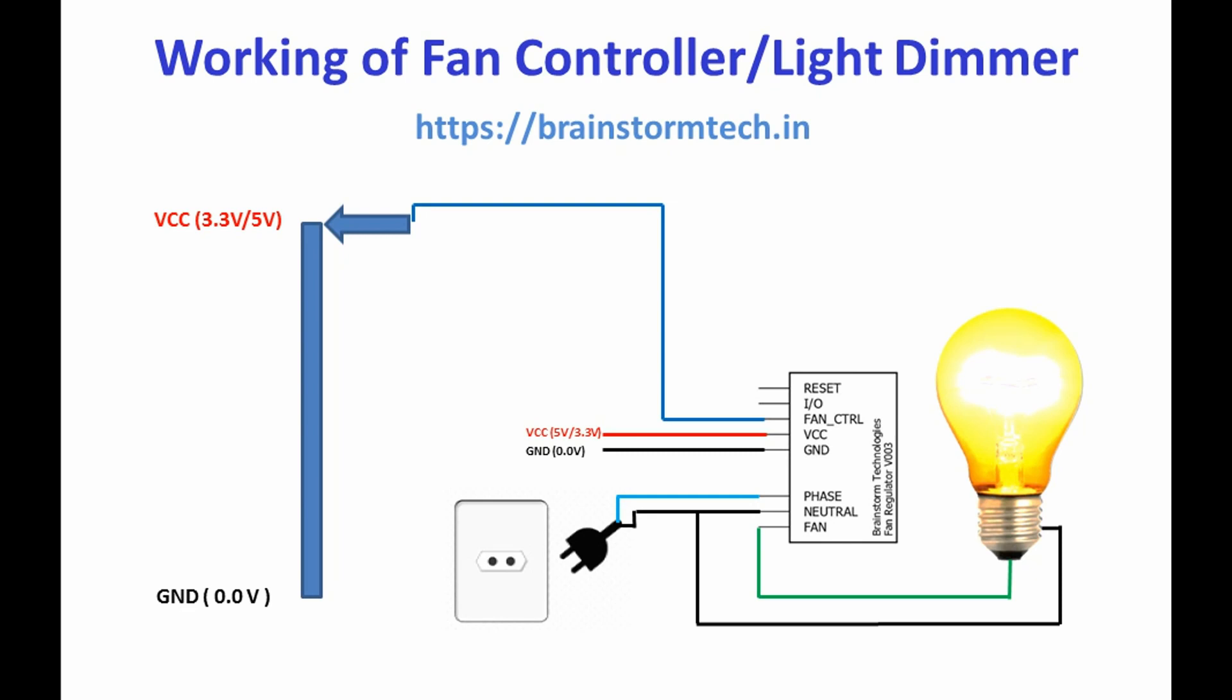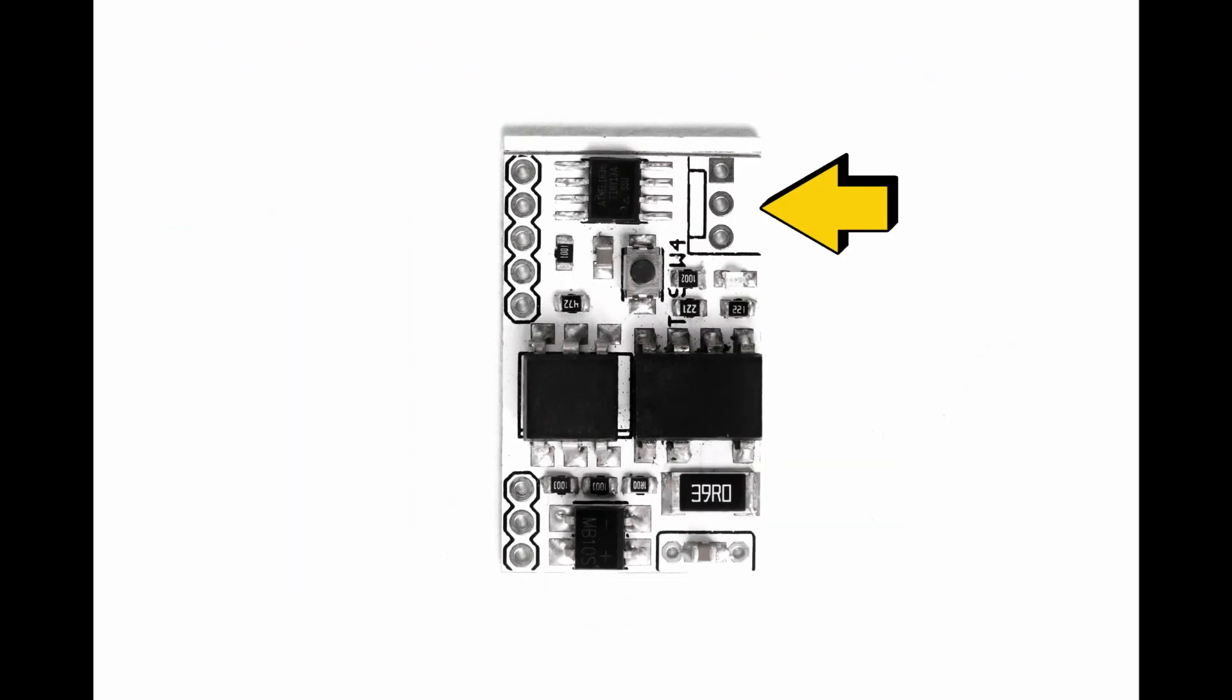To control, you can give the control voltage by using a potentiometer or by using a microcontroller DAC pin. You can decrease the voltage on the control pin to reduce the fan speed or light intensity. A separate port is also given to connect the potentiometer. You can control the fan speed or light dimming optionally by using a potentiometer or microcontroller, but both methods will not work simultaneously.